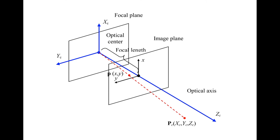The distance between the focal point and the image plane is the focal length. When you lengthen the focal length, you're zooming — the picture gets bigger, telephoto. When you shorten it, you're collecting from a wider field of view and the picture gets smaller, wide-angle.